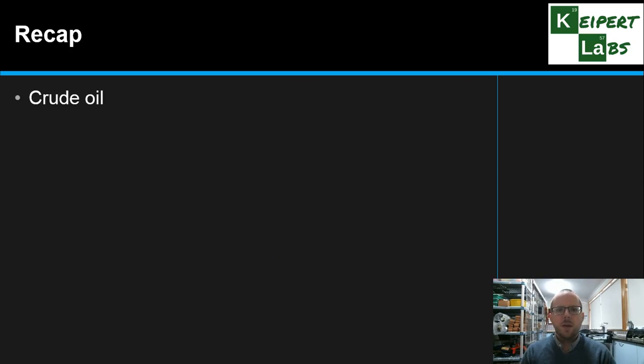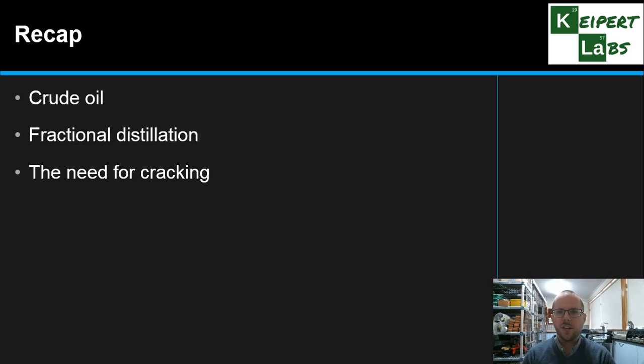Okay, so just to quickly recap. We talked about crude oil as the natural mixture from which lots of these useful hydrocarbons come. We know that fractional distillation is the process that we need to separate the fractions from each other, but that fractional distillation alone doesn't give us enough of the fuel components that we need. So if we take longer components and crack them or break them into smaller sections, we get more fuel and we also get the basis of plastics or polymers, and that we use two processes of thermal and catalytic cracking to achieve our goal. Thanks so much for watching. Bye for now.